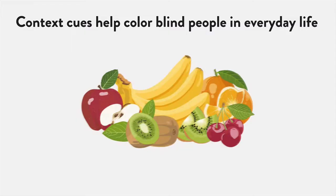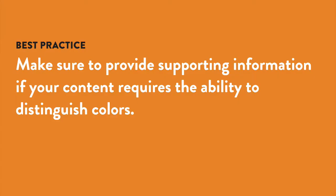In the physical world, people who are colorblind can often rely on other cues like size, shape, and even labels. Some of these other cues may not be available on a website. We need to make sure that none of our content requires the ability to distinguish colors, and if it does, we need to add additional information to help colorblind users.